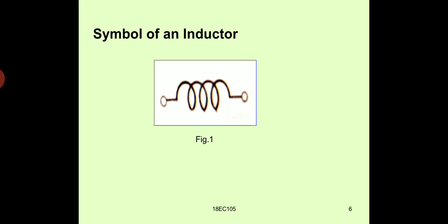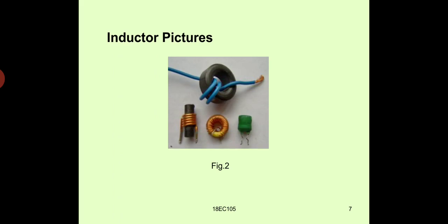Let us visualize how they look physically in real life. Here you will be seeing a few coils or inductors. The middle ones are toroidal cores — one bigger and one smaller. The left one is a ferrite cylindrical core, and the right one is an inductor with a normal core.